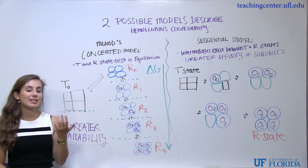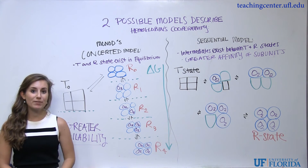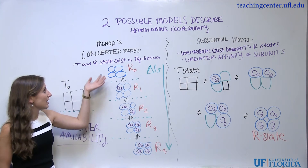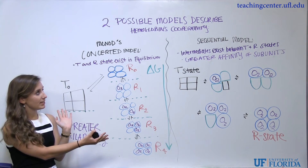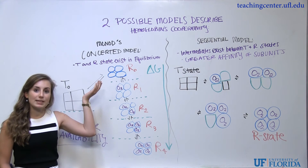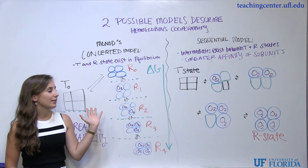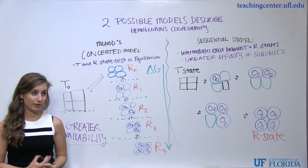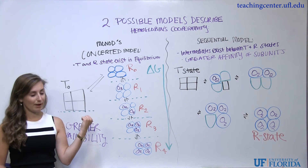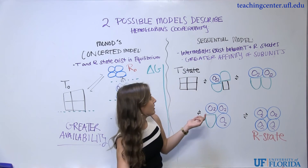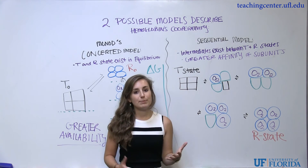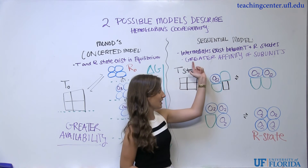Now we will look at two models to describe hemoglobin's positive cooperativity: Monod's concerted model on the left and the sequential model on the right. Dr. Pirich goes over both in class, and ultimately explains that the concerted model is the true one explaining hemoglobin's sigmoidal curve. Starting with the sequential model, it proposes that intermediates exist between the T-state and the R-state — and this idea of intermediates is what distinguishes it from the concerted model.